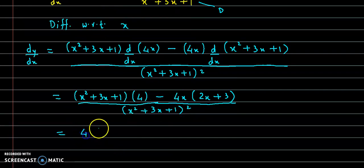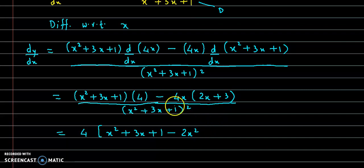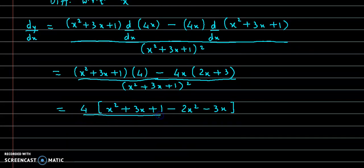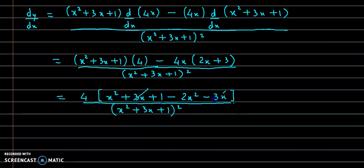From the numerator we can take 4 as a common factor. So in the bracket we get x square plus 3x plus 1 minus, multiplying out: x into 2x gives 2x square, so minus 2x square; x into 3 gives 3x with a minus sign, so minus 3x; divided by denominator remains as it is, that is x square plus 3x plus 1 the whole square. Now 3x and minus 3x cancel out.